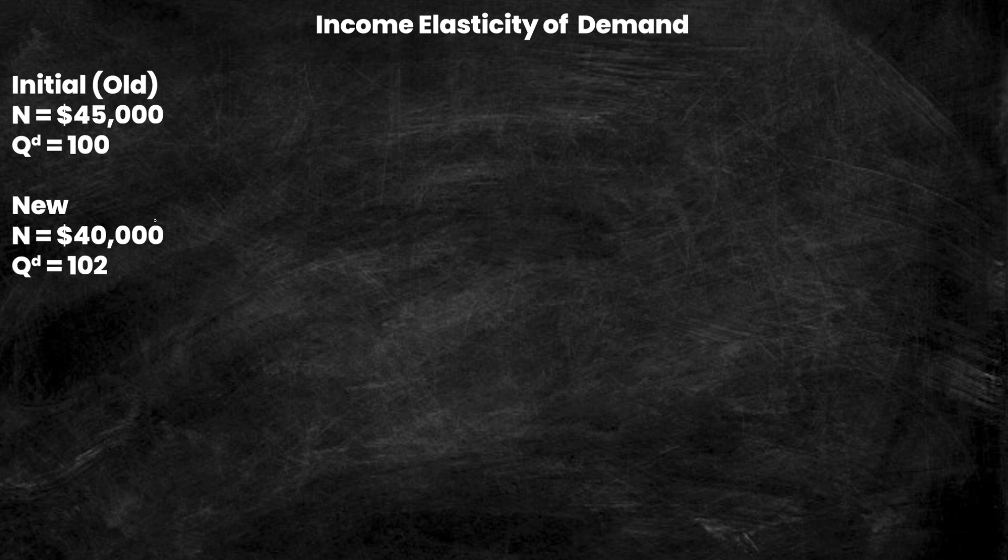We notice that quantity demanded goes from 100 to 102, so it actually goes up. That's something we're going to explore—by the end of this you'll understand why that's happening, why income could go down and quantity demanded would go up. However, in the meantime, let's calculate the elasticity, as that's what you're here for.